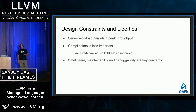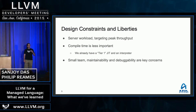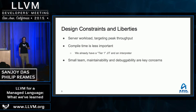So you understand where we're coming from on the project: this is really targeted at server workloads where peak throughput is the primary constraint. We are a just-in-time compiler, but we are a very high tier JIT. If you come into this thinking that compile time is going to be the key constraint, get that out of your head. We already have an existing tier one and interpreter, so this is a high tier JIT.